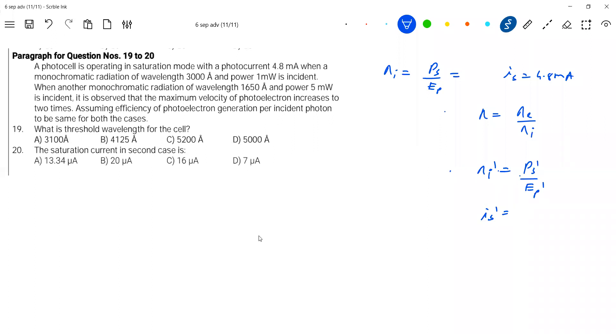You know efficiency from the first case. The efficiency will remain the same, and you know N_i dash, so you will get N_e dash. N_e dash equals eta times N_i dash. And from N_e dash you are going to calculate the saturation current.